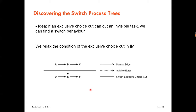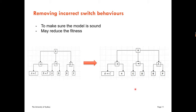Every time the exclusive choice cut cuts through an invisible edge, we can find a switch behavior. However, because the Inductive Miner is a divide-and-conquer approach, at the time of the exclusive choice cut we have no knowledge of what the children operators are, so we cannot guarantee the found switch behaviors won't make the process model unsound. Therefore, we double-check the switch process tree at the end and go through each operator to see if any switch behavior violates our restriction — for example, a switch from B to F causing a potential deadlock — and delete those switch behaviors.